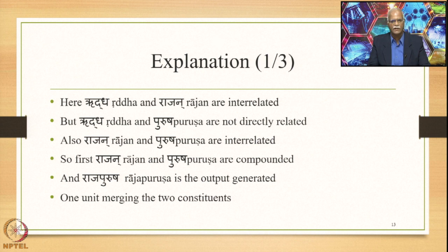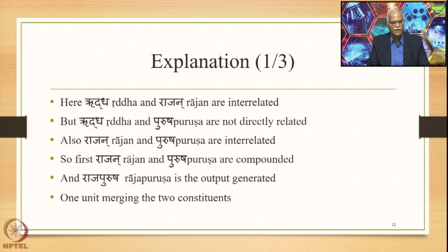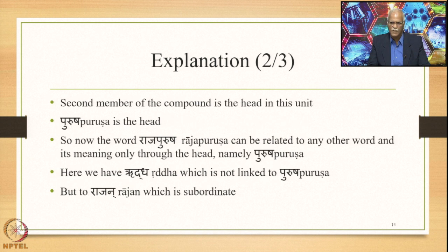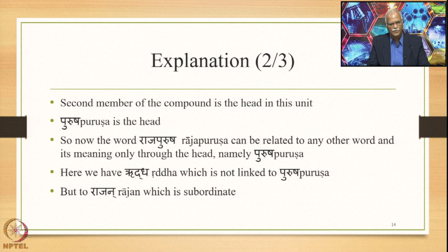Ruddha and Purushaha are not directly related. Also, Rajan and Purushaha are interrelated. So first Rajan and Purushaha are compounded, and Rajapurushaha is the output generated. This is one unit in which two constituents are merged — their meanings are merged — and the unit consists of the Uttarapada being the head. Rajapurushaha has Purushaha as the head. The word Rajapurushaha can be related to any other word and meaning only through the head, namely Purushaha. But here we have Ruddha, which is not linked to Purushaha — it is linked rather to Rajan, which is a non-head element in the compound. This is what causes the Asamarthattva.